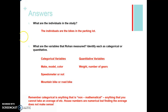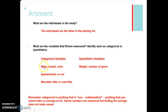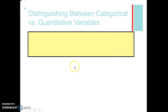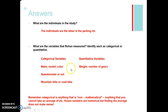The individuals in this case were the bikes in the parking lot — that's what we were studying. The categorical variables are the make, the model, the color, whether it had a speedometer or not, and whether it was a mountain bike or a road bike. Notice your categorical variables — the make, model, and color — we can't do anything mathematical with those. Your quantitative variables are the ones you can find averages of: the weight of the bike and the number of gears. You can find the average number of gears or the average weight of a bike.